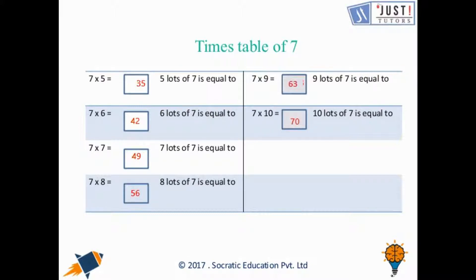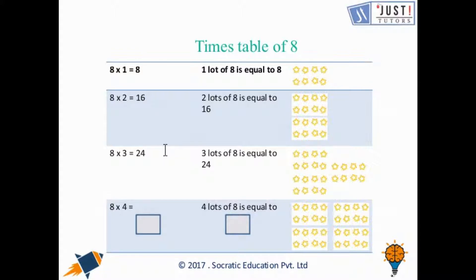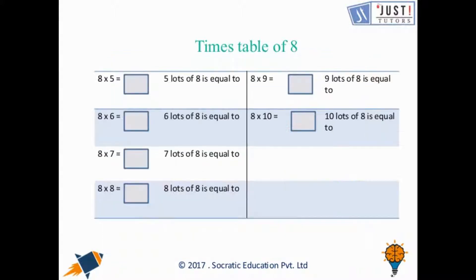Now talking about the 8 times table. 8 times 1 is 8, 8 times 2 is 16, 8 times 3 is 24, 8 times 4 is 32, and the same as 4 lots of 8 which is equal to 32 as well.